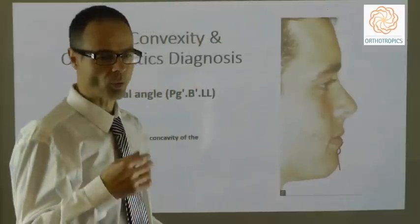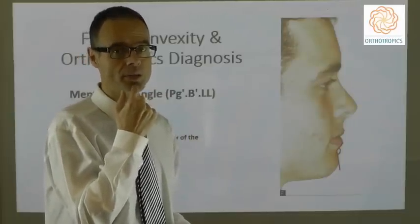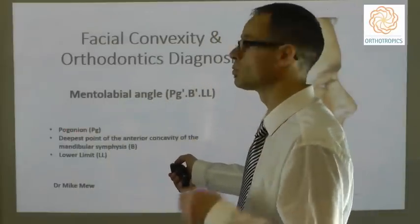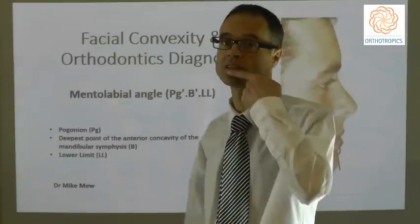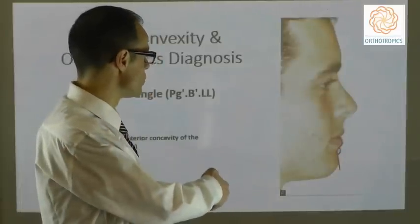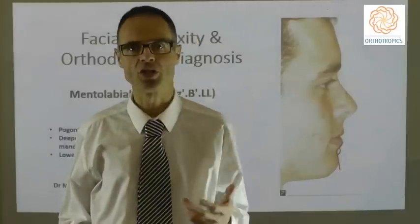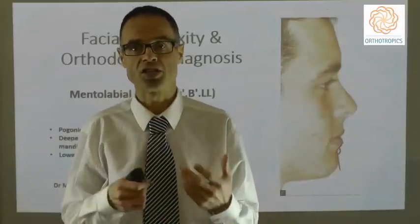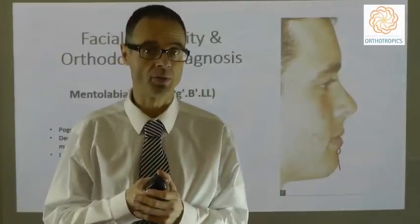The mentolabial angle — we've discussed the mentolabial fold before. This is a fold between the lower lip and the mentalis muscle, and this angle tries to gain some assessment of its size. To do this, we look at pogonion on the front tip of the chin, the deepest point of the anterior concavity of the mandibular symphysis — basically the bottom of the fold — and the lower limit of the lower lip. By linking those three points together you can assess the depth of the mentolabial fold. It's an interesting concept, but usually you would just look at the mentolabial fold and say it's shallow, deep, or very deep, rather than making an actual measurement, because every individual's different and it's frequently quite difficult to find some of these points.